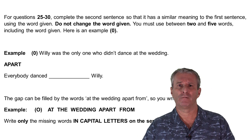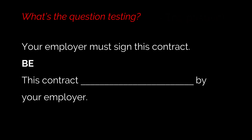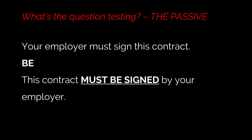Look at this question for example: 'Your employer must sign this contract.' What's the question testing? Well done if you noticed it's testing the passive. For the passive you use a suitable form of the verb 'to be' plus a past participle verb. So the answer is: 'This contract must be signed by your employer.'